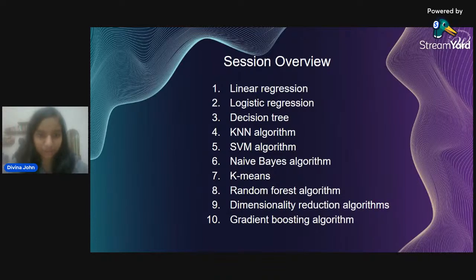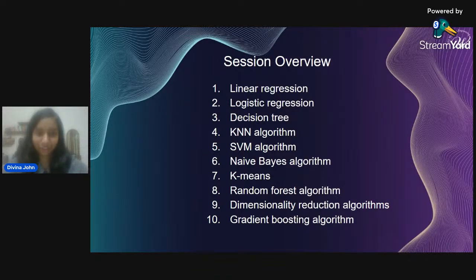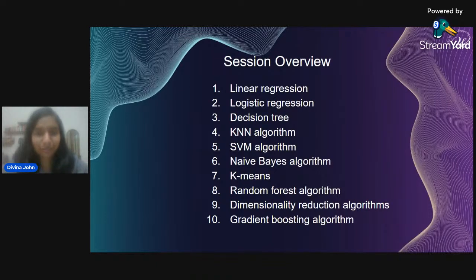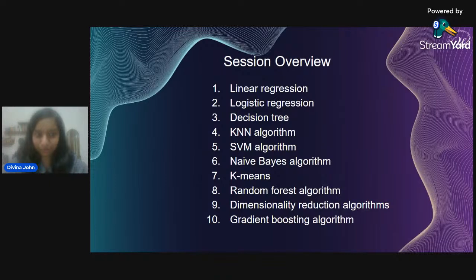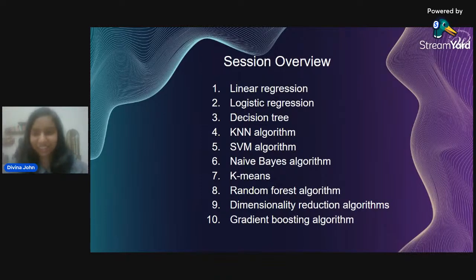These are the 10 backbone algorithms: linear regression, logistic regression, decision tree, KNN, SVM, Naive Bayes, K-Means, random forest, dimensionality reduction, and gradient boosting. These names may sound like fancy terms right now, but we'll go very slowly and understand every single aspect. Don't worry if they look daunting — we'll cover everything in detail.